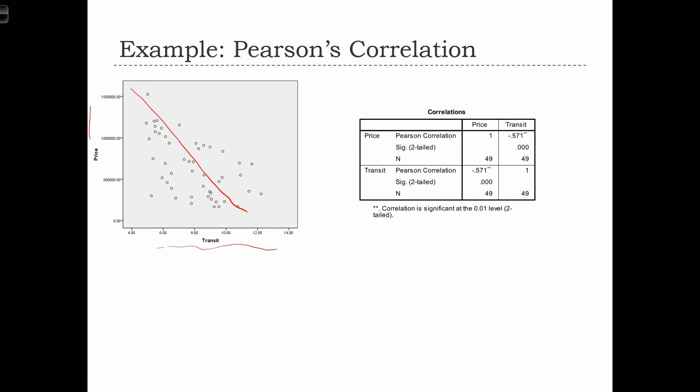We can compute the T statistic again. So here we've got T equals R times square root N minus 2 over 1 minus R squared, which equals minus 0.571 root 47 over 1 minus minus 0.571 squared, which equals minus 4.8.